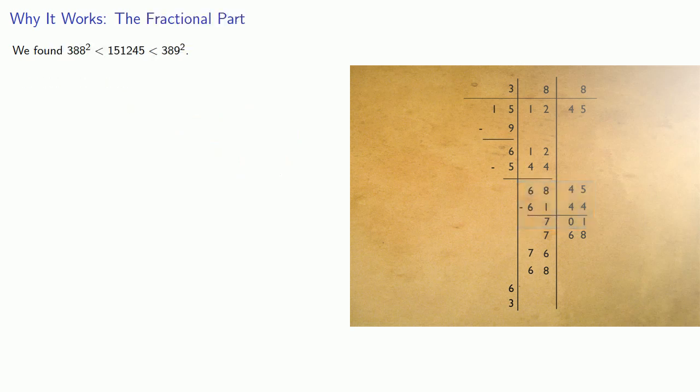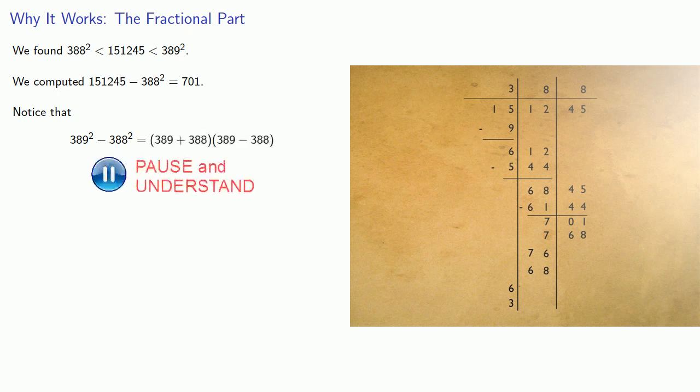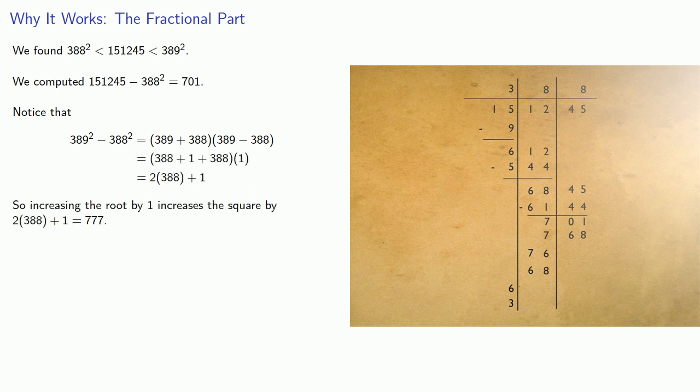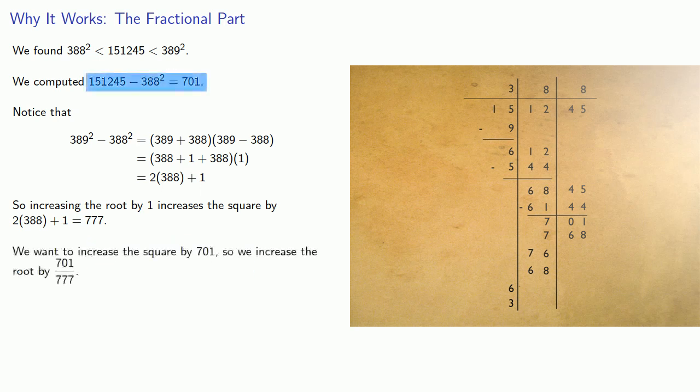What about the fractional part? We computed the difference between 151,245 and 388 squared to be 701. Let's consider the difference between 389 squared and 388 squared. Because this is a difference of squares, we can compute it very easily. The way to interpret this is that increasing the root by 1 increases the square by 777. Since we want to increase the square by 701, we increase the root by 701/777. That's the source of the fractional part of the approximation to the root.